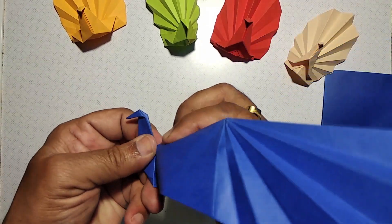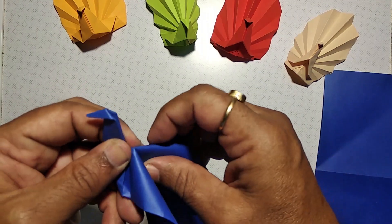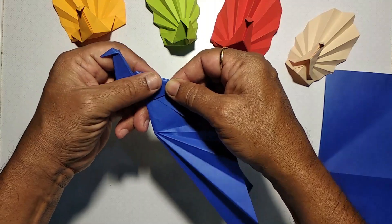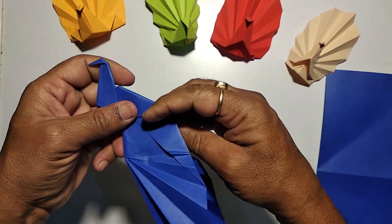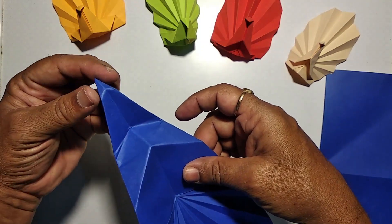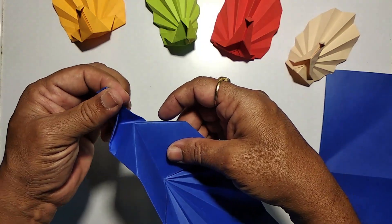Now you can see we have made three folds: beak, neck, and the bottom.